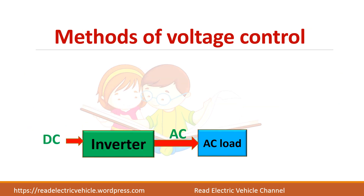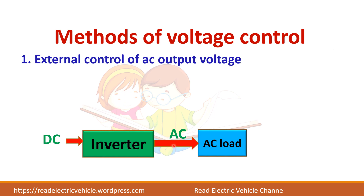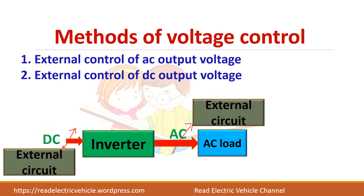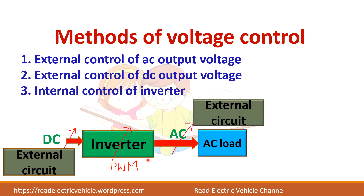There are different methods to control the output voltage of an inverter. We know an inverter converts DC to AC, and I want to control the output voltage of this AC. I can use some external circuit to control this AC output voltage, or I can vary this voltage using some external circuit, or I can simply control the inverter using pulse width modulation technique. Let us see all these methods one by one.